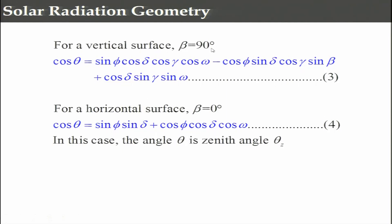You can simplify these expressions for special cases. For a vertical surface with beta = 90 degrees, cos(theta) simplifies to include terms with sin(phi)sin(delta)cos(gamma), cos(phi)cos(delta)cos(gamma)sin(beta), and a term including cos(delta)sin(gamma)sin(omega). Here phi is position-dependent, delta is the declination angle (day-dependent), gamma is the surface normal angle with respect to north-south, and omega is the hour angle - all of which can be determined.